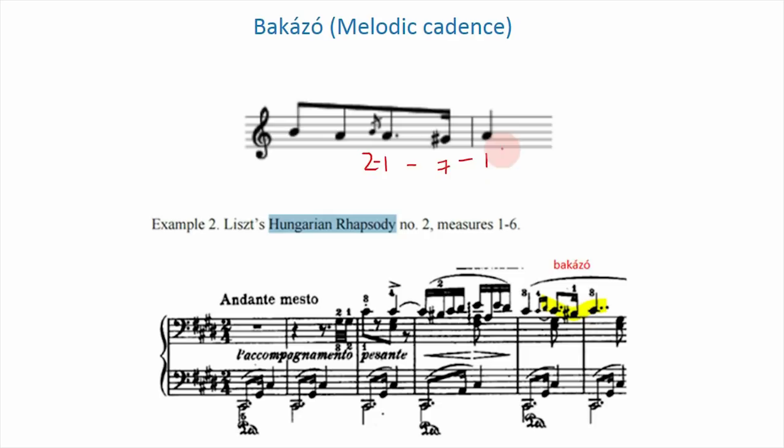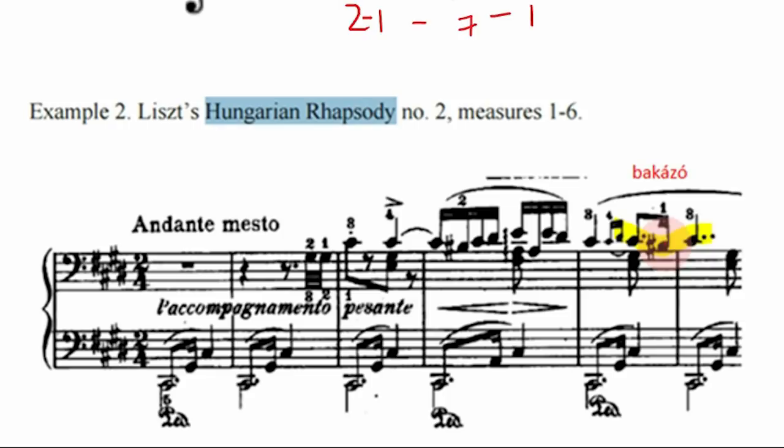At the start of the Lassan — which is the first section of this Rhapsody — you'll notice that Liszt does this, one of many times, in the fifth and sixth measures. I'm going to show you a brief audio clip of the beginning of the Lassan so you can get a sense of what that sounds like.